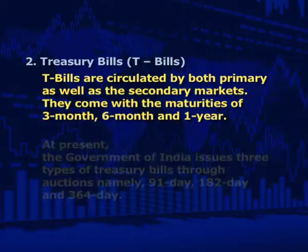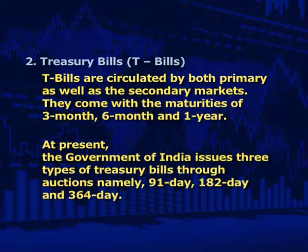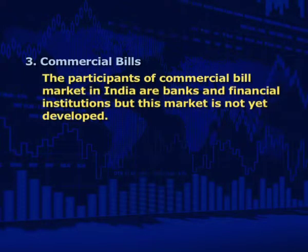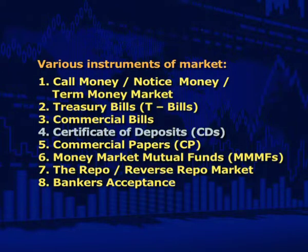T-bills are bought through a bidding process via auctions. At present, the Government of India issues three types of treasury bills through auctions: 91-day, 182-day, and 364-day. Third is commercial bills — issued by financial institutions. The commercial bills market is basically a market of instruments similar to bills of exchange. The participants of the commercial bill market in India are banks and financial institutions, but this market is not yet well developed.